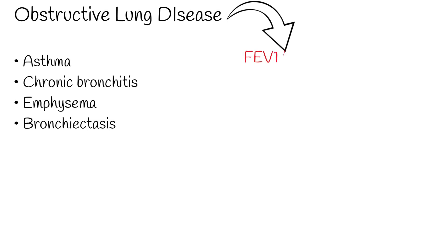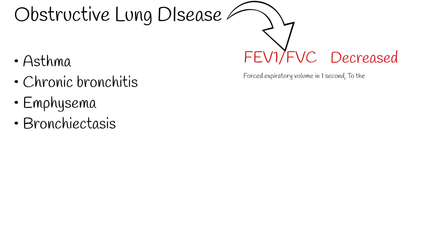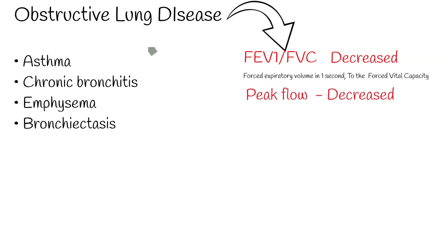The key feature of obstructive lung disease is that the ratio of forced expiratory volume in one second (FEV1) to forced vital capacity (FVC) is decreased. FEV1 is the maximum amount of air that the subject can forcibly expel during the first second following maximal inhalation. Forced vital capacity is how much air a person can exhale during a forced breath.